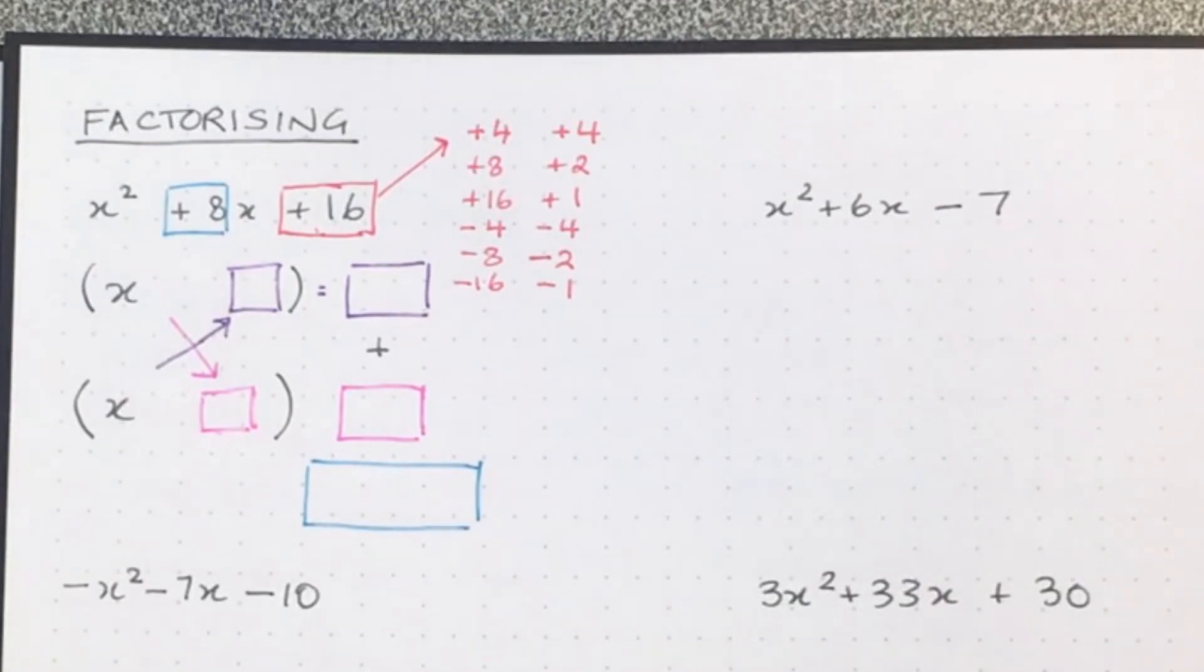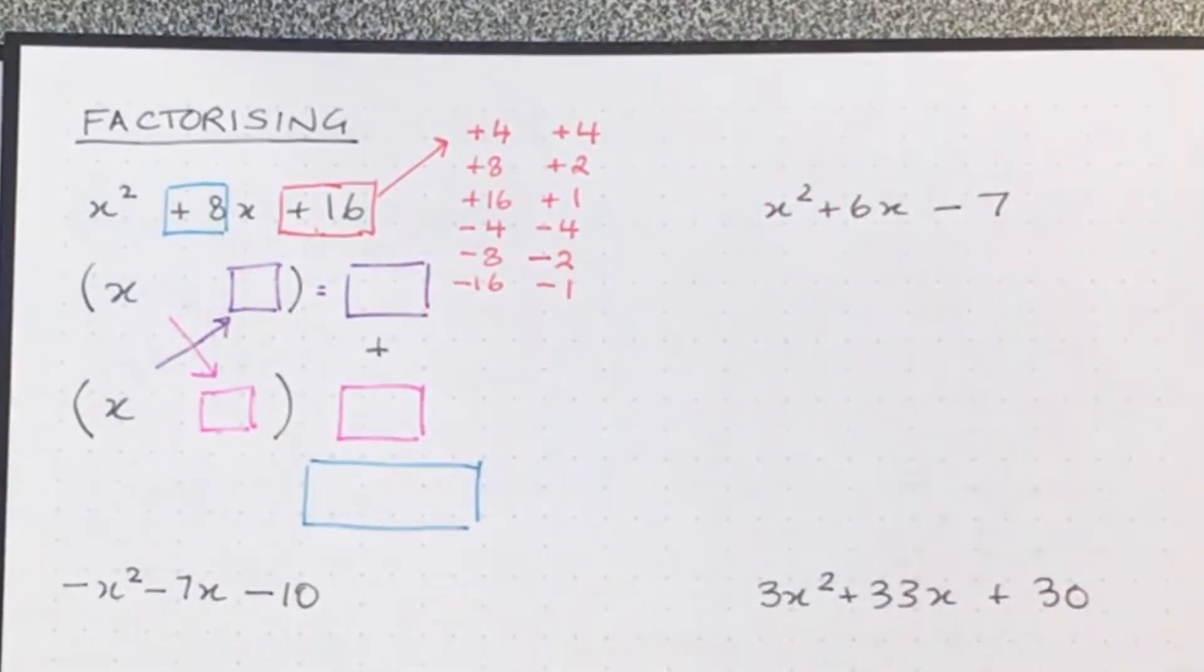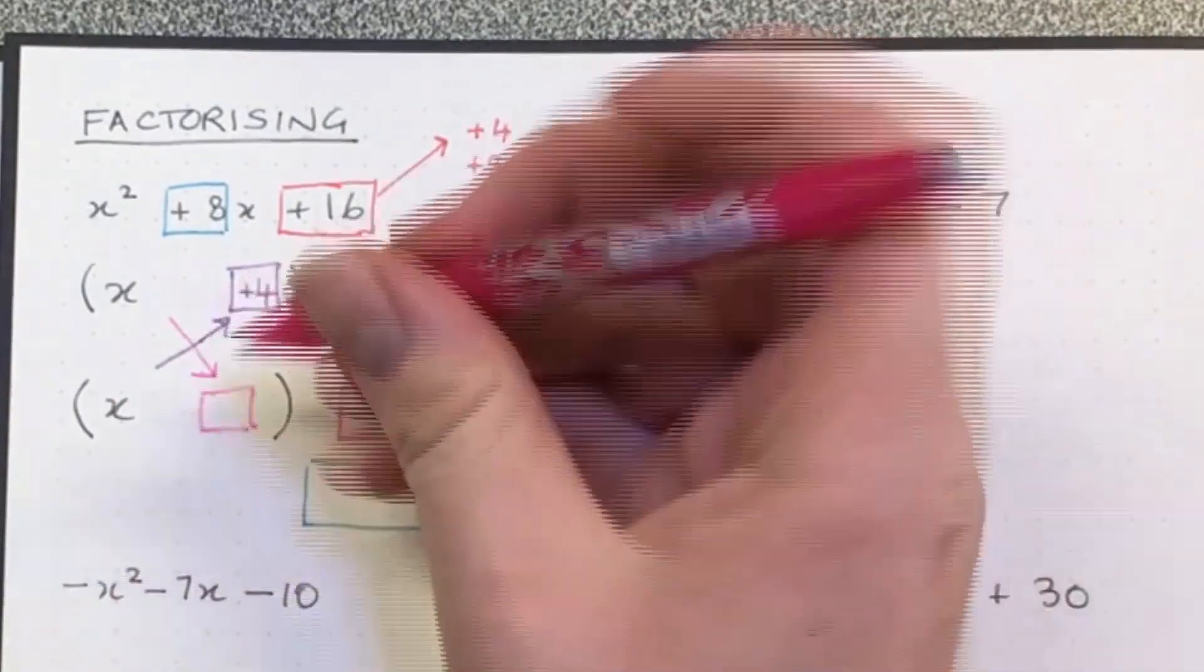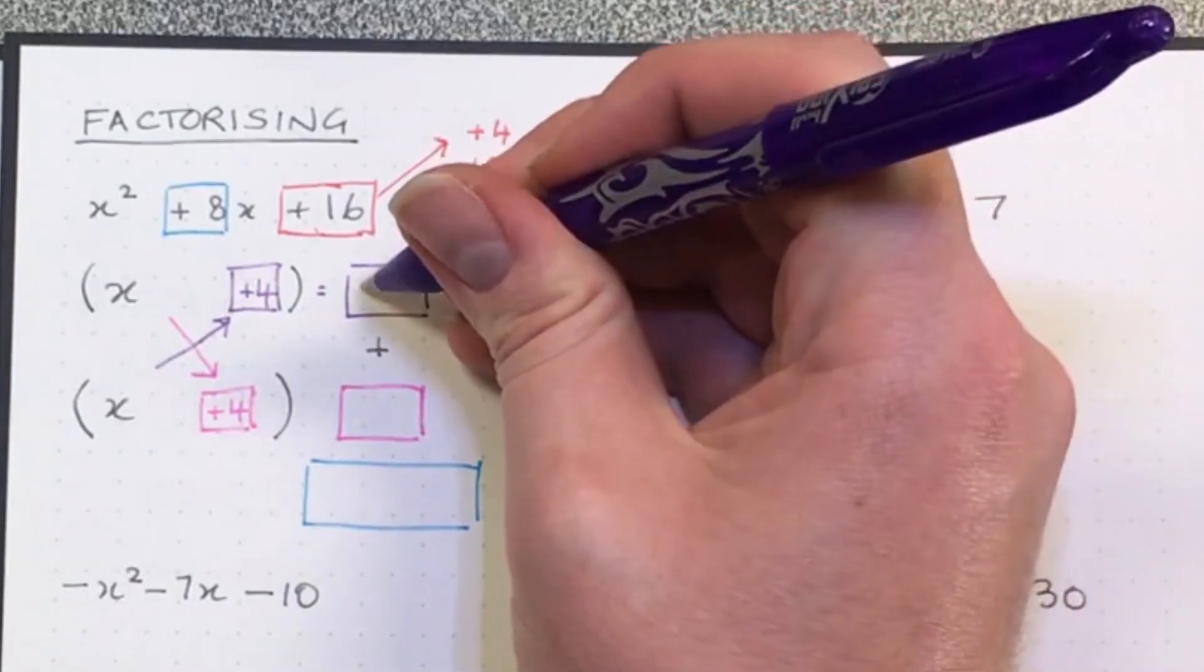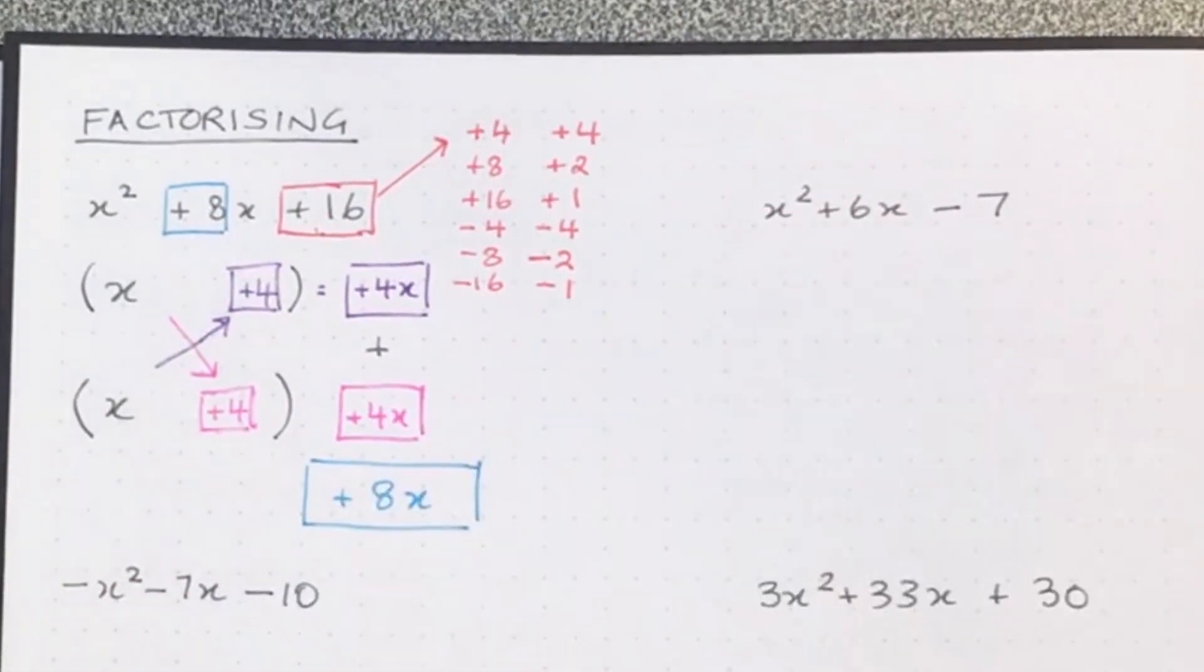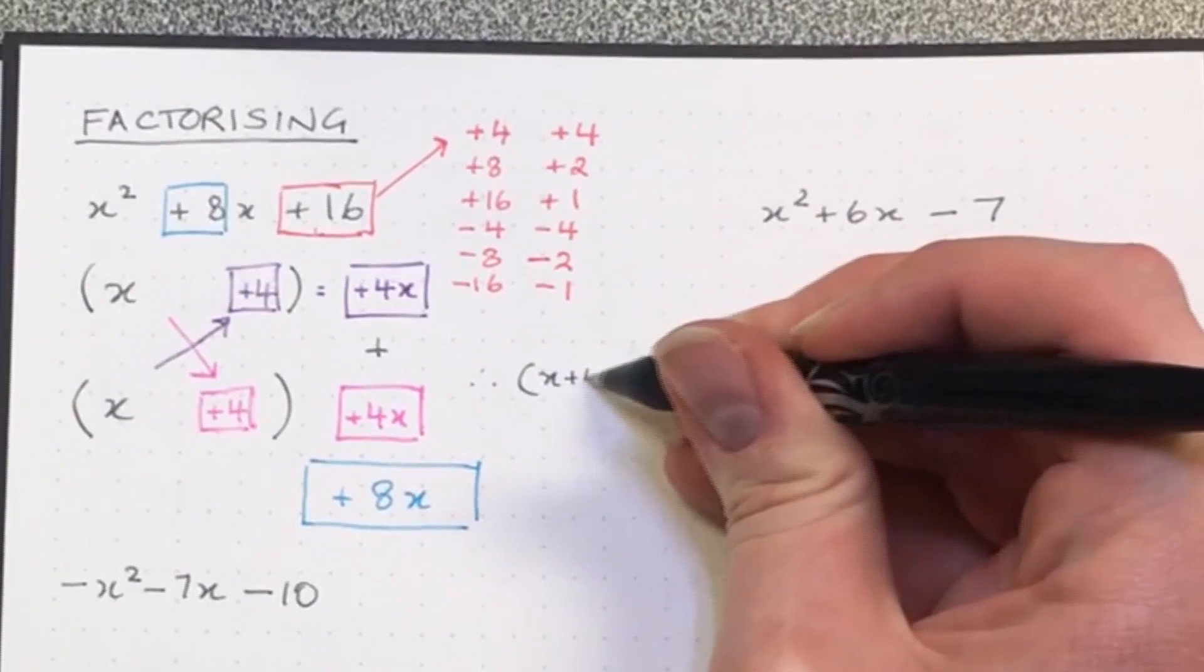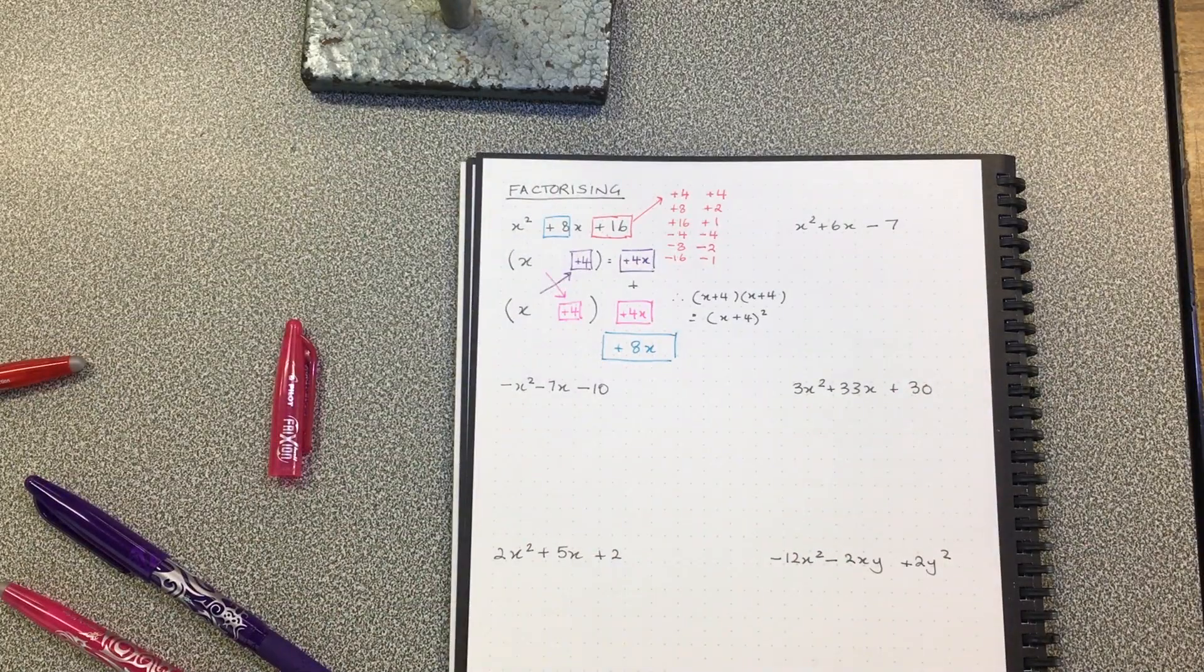So positive four and positive four. X times by positive four is positive four x. X times positive four is positive four x. Add these two together and I get positive eight x. So that means the answer to this factorising is x plus four, x plus four. Since they are identical, I can write them as x plus four all squared.